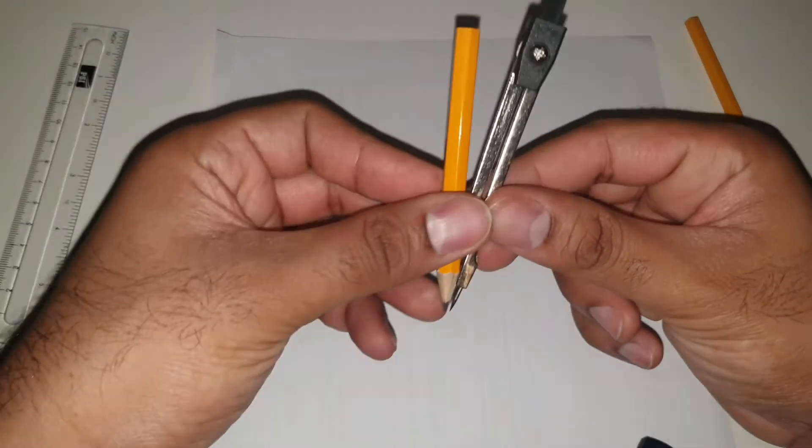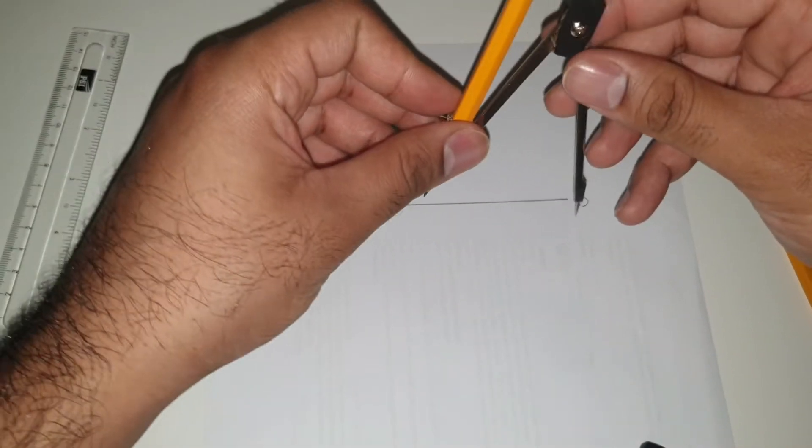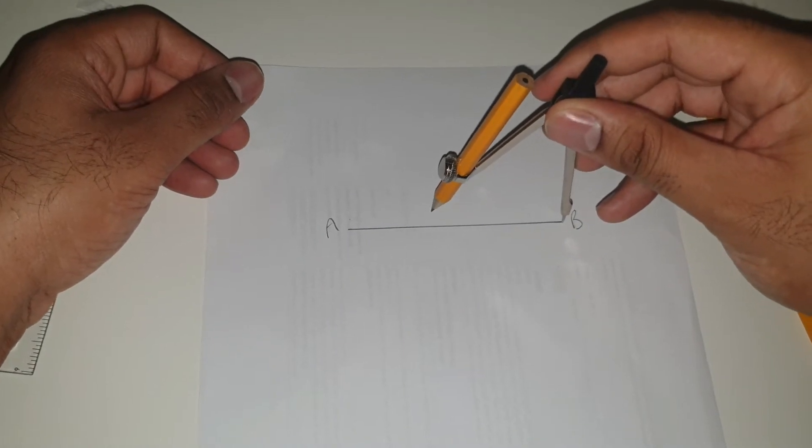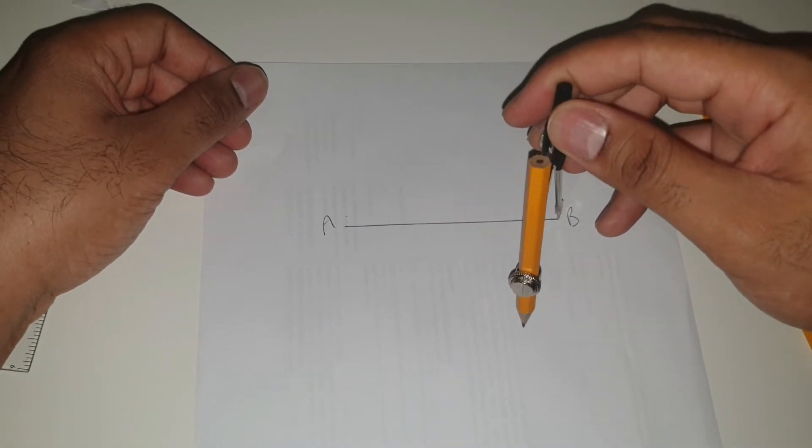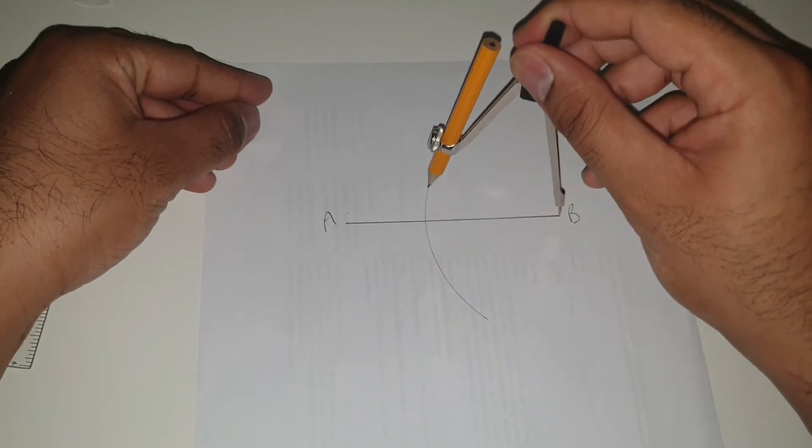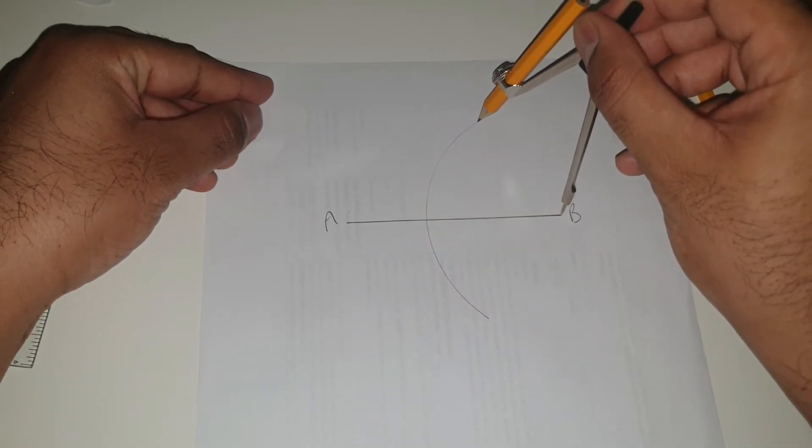So what you need to do is take your compass and set it to around about just over halfway. And then you can just draw a semicircle, or I would say a third of a circle rather, just there.